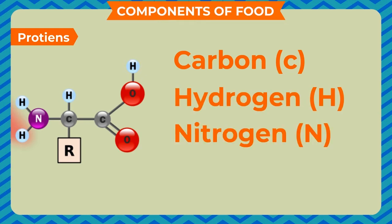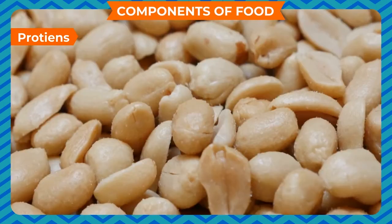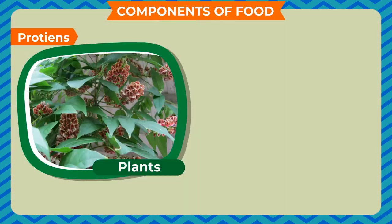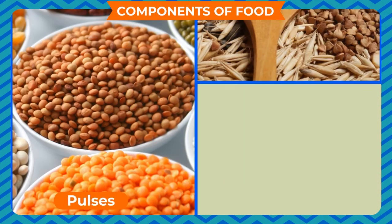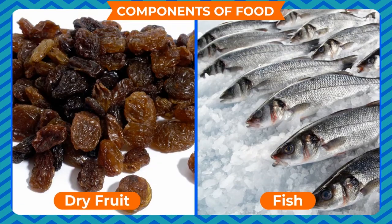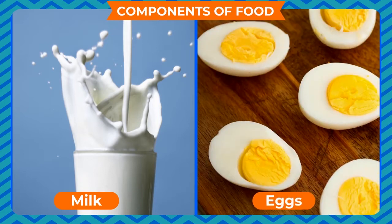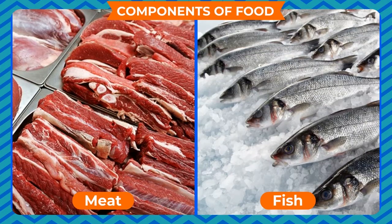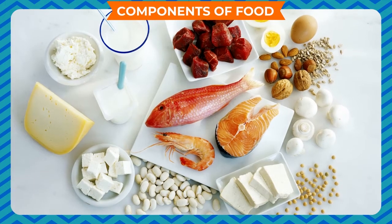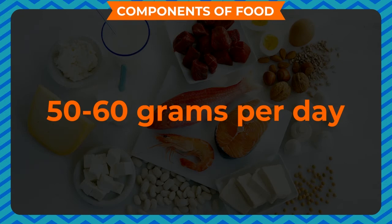Similar to fats, proteins are also obtained from both plants and animals. Pulses, cereals, beans, groundnuts, and dry fruits are sources of plant proteins. Milk, eggs, meat, and fish are the main sources of animal proteins. The total requirement of proteins for an adult is about 50 to 60 grams per day.